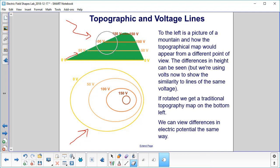So there we go. We've rotated a mountain, so we've looked at the side view at the top and a view from the top down. And now we'll go to the next slide and talk about equipotential lines.